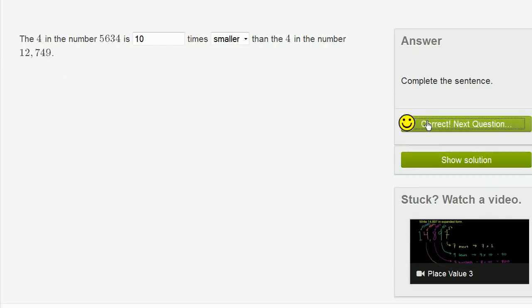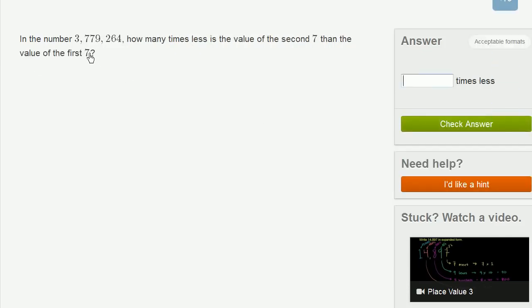Make sure I got the right answer. Let's do another one. The number 3,779,264, or in the number 3,779,264, how many times less is the value of the second 7 than the value of the first 7? How many times less is the value of the second 7 than the value of the first 7?